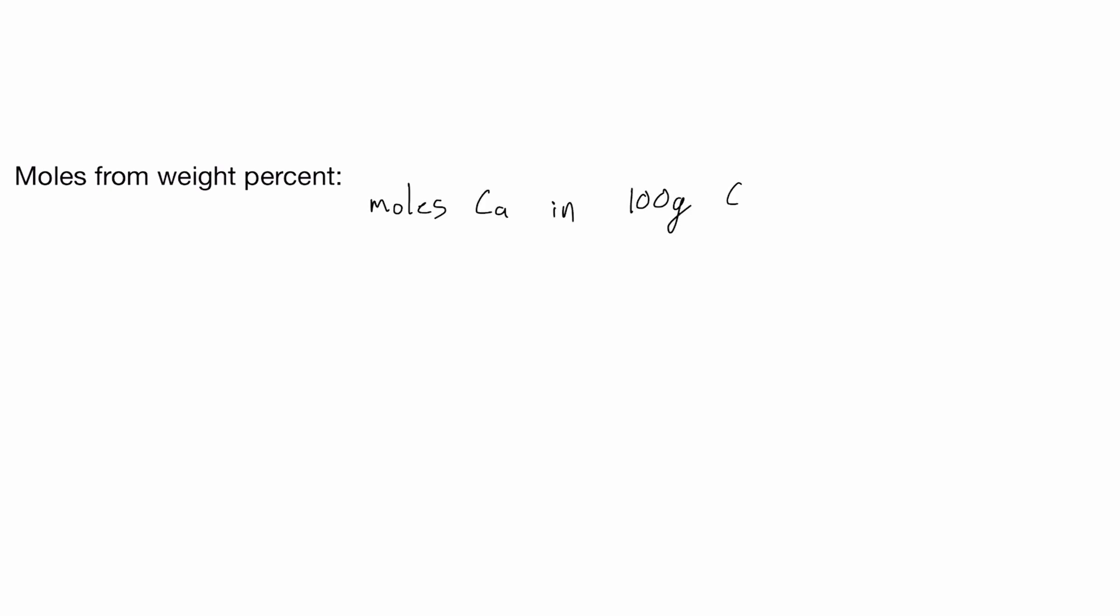The weight percent of an atom or group of atoms in a molecule can also be used to find the moles in a certain mass of that molecule. If we have 100 grams of calcium phosphate, and we know that 38.76 percent of that mass is calcium, then we have 38.76 grams of calcium. Dividing that by the molar mass gives us the number of moles of calcium.